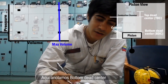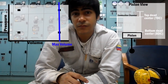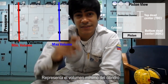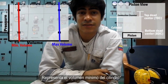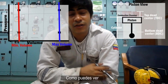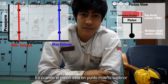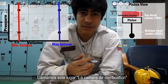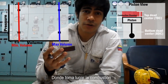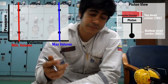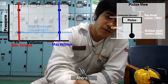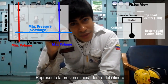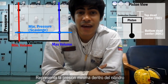So we're going to write here: bottom dead center. If we make a line between these two points, it represents the minimum amount of volume you can have inside the cylinder, which you can see here is when the piston is in top dead center — between top dead center and the top of the cylinder. We call this space the combustion chamber, which is where combustion will take place. Now, if we make a line between these two points, you can see it represents the minimum amount of pressure you can have inside the cylinder.